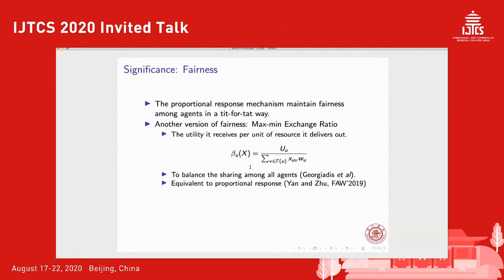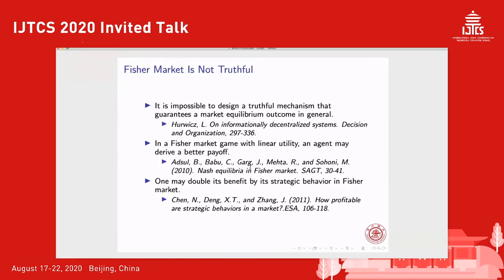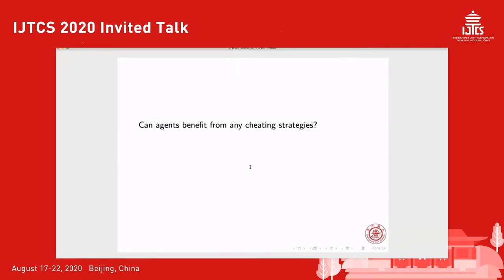Up to now, everything is very good. Market equilibrium can be obtained by the proportional response and it maintains fairness among agents. But such a good result only holds when agents honestly follow the proportional response mechanism. The question is: will all agents follow this proportional response? Or will any agent be able to benefit from cheating strategies? For the market equilibrium solution concept, the answer is yes. There are famous results showing agents can benefit from the market equilibrium by cheating strategies, and in our work we also answer yes, under some conditions.